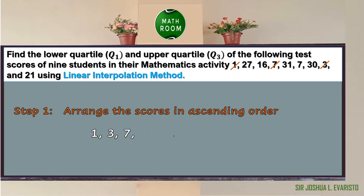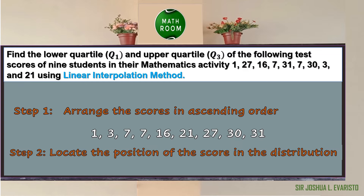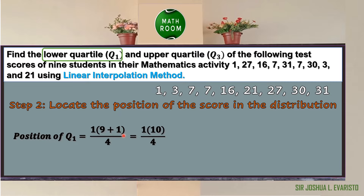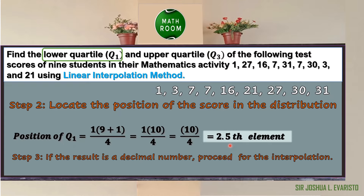The scores arranged in ascending order are: 1, 3, 7, 7, 16, 21, 27, 30, and 31. The second step is to locate the position of the scores. Using the formula for quartile, the position of Q sub 1 = 1 × (9 + 1) / 4, where k = 1 and n = 9. Computing: 9 + 1 = 10, 10 × 1 = 10, 10 ÷ 4 = 2.5. The computed value is 2.5.